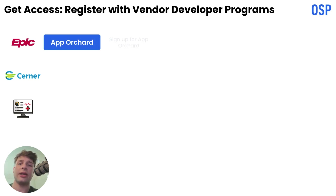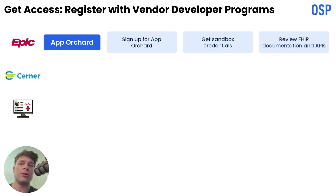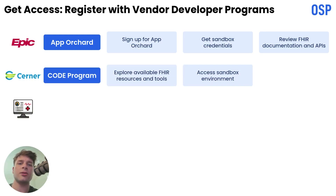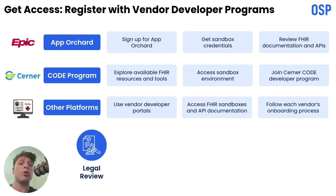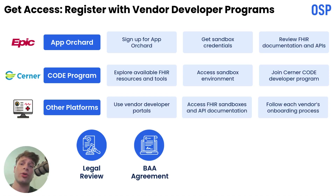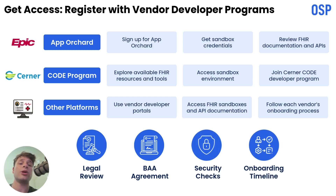Epic has App Orchard — sign up, get sandbox credentials, and review their documentation. Cerner has the Code program and a similar sandbox. Other EHRs and cloud FHIR services have developer portals too. This is more than clicking a button. You'll often need legal review, a business associate agreement, and time for security checks. Expect onboarding to take weeks, sometimes longer — so add that to your timeline.